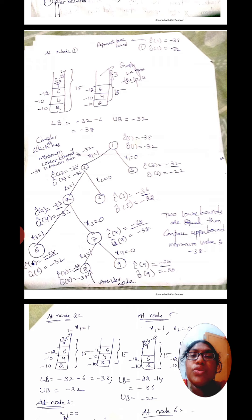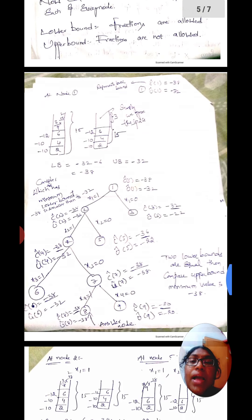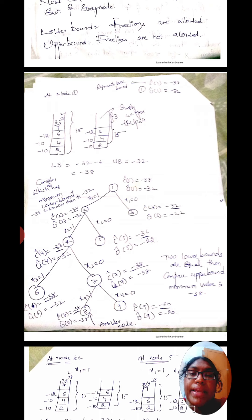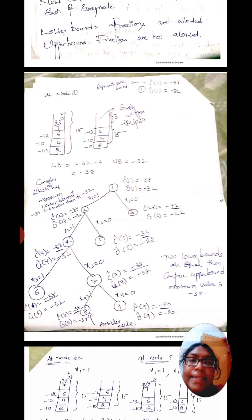The remaining capacity is 15 minus 12, which is 3. The remaining weight for the fourth object is 9. So we compute 3 divided by 9 into minus 18, which gives minus 6. For the lower bound: minus 10 plus minus 10 plus minus 12 equals minus 32, plus minus 6 gives minus 38.